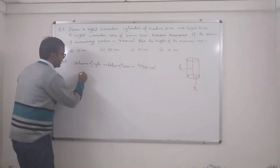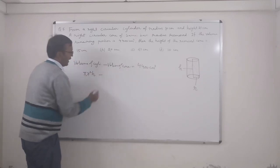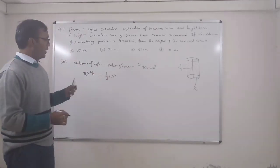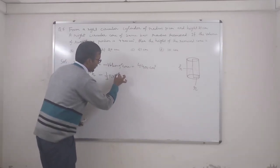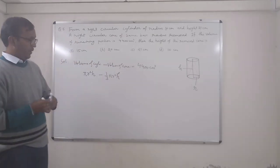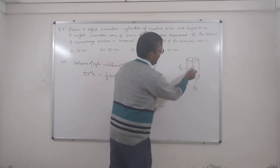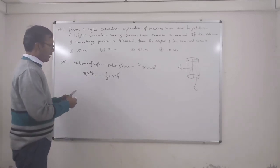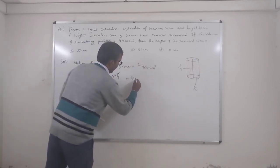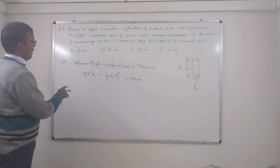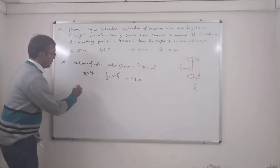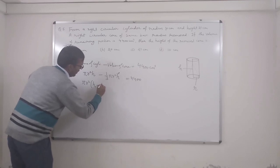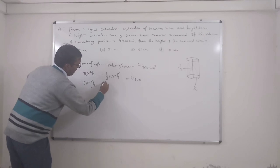The formula for volume of cylinder is πr²h, and for the cone it is (1/3)πr²h'. The r is the same for both, but the heights are different — h for the cylinder and h' for the cone. We need to find h'. So: πr²h − (1/3)πr²h' = 4400.